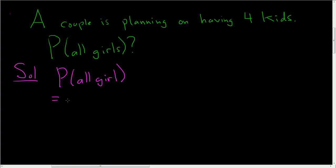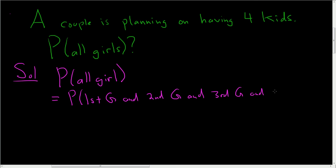So what does that mean? That means that the first kid that is born is a girl, and the second kid is also a girl, and the third one is a girl, and finally the last one is also a girl. So whenever you see an "and" like this, what you want to do is use the multiplication rule. You notice that it didn't say "and" in the original question — it just said "all girls." So you do have to think about it: all girls means the first one is a girl, and the second one is a girl, and the third one is a girl, and the fourth one is a girl.